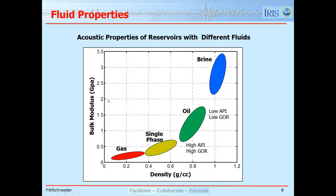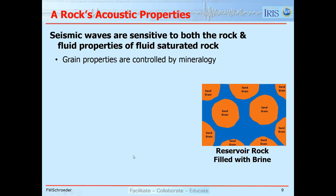This is a cross plot of bulk modulus versus density for a reservoir-quality sand with brine versus oil versus gas. These plot in different spaces on this two-dimensional cross section. If we have information about the density and bulk modulus, we can predict what type of fluid should be in our potential reservoir units.